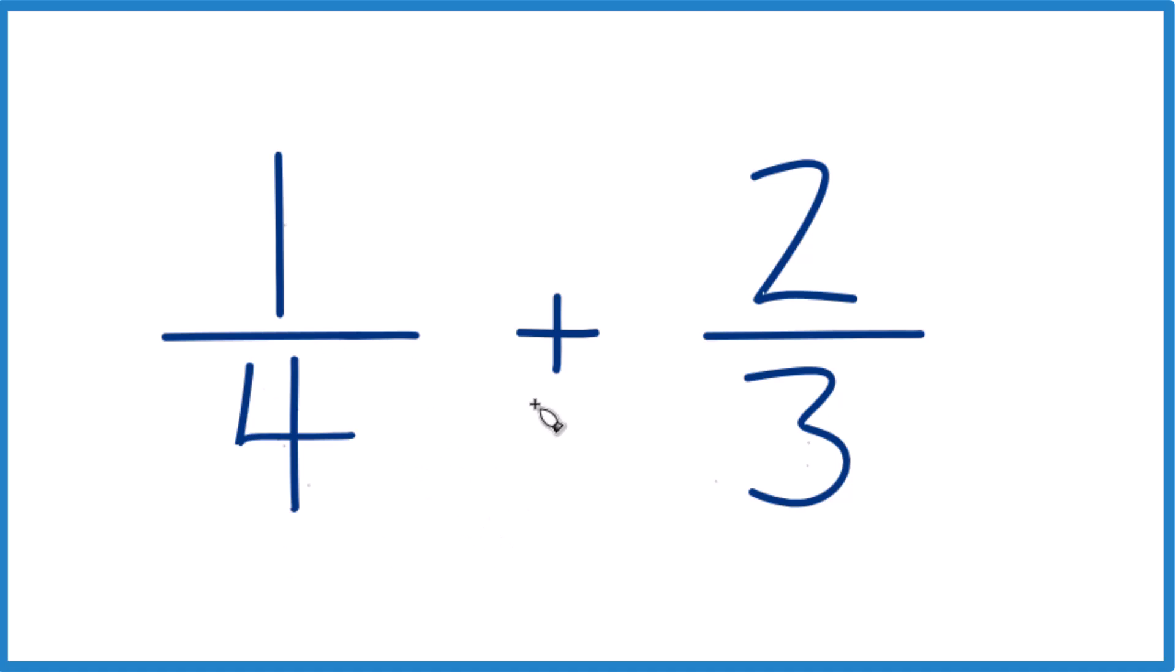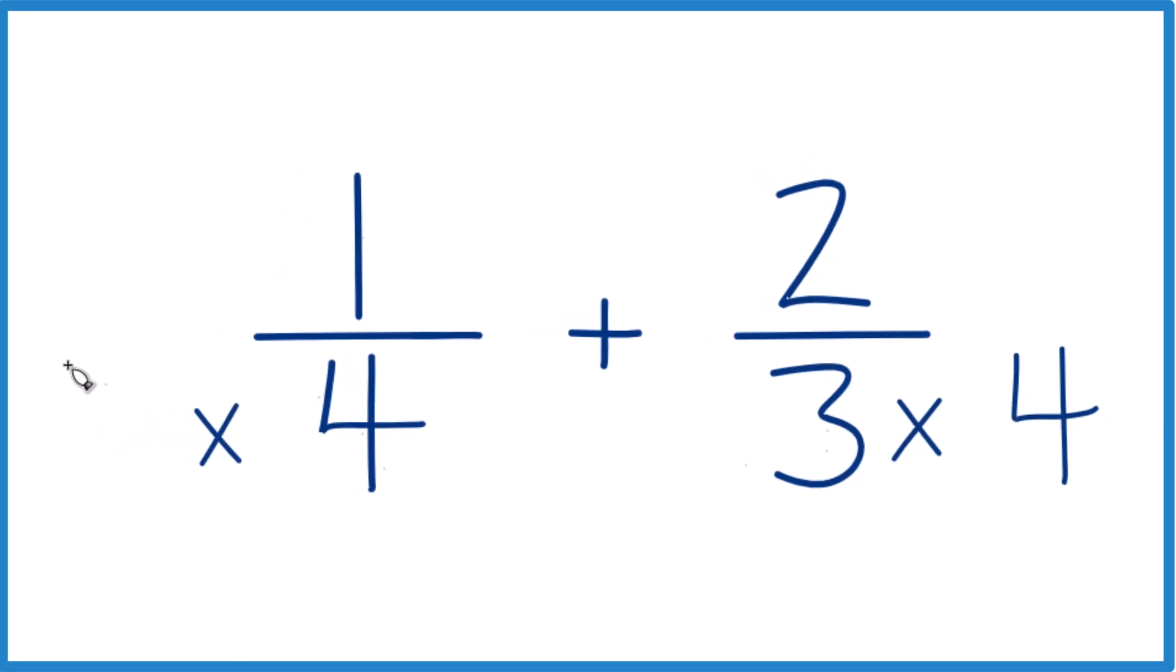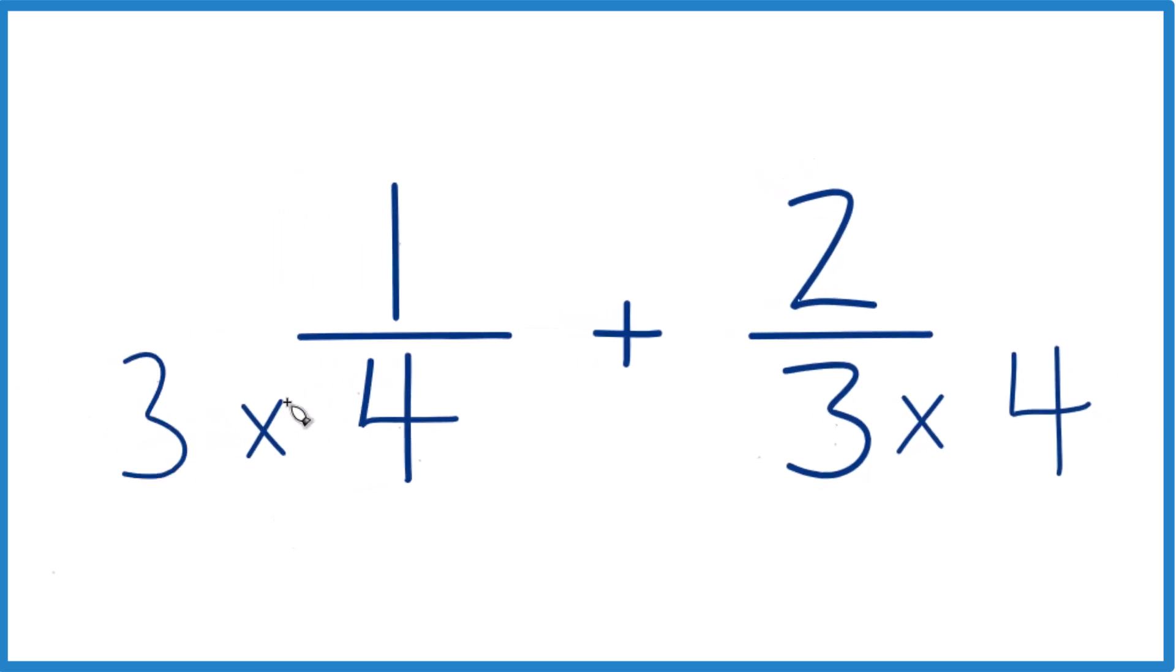So why don't we do this? Why don't we take 4 and say 4 times 3 here and over here 3 times the 4. So 3 times 4 on this side and 4 times 3 on this side. Because now we'll have 12 for both of our numerators. But we can't just multiply the denominator by the number here. We need to multiply the numerator as well.